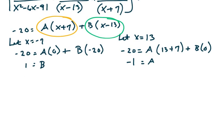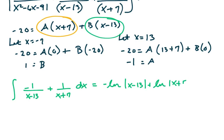Now let's put the coefficients back in and integrate. We can replace the integrand. A is minus 1, so minus 1 over x minus 13 plus 1 over x plus 7 dx. Let's take the antiderivative and you get minus ln of x minus 13 plus ln of x plus 7.